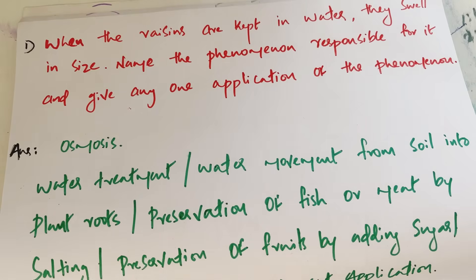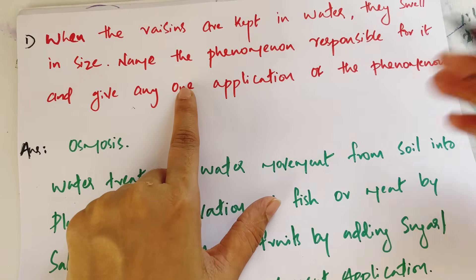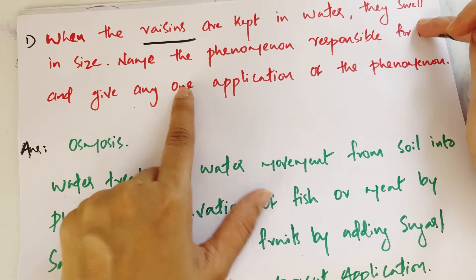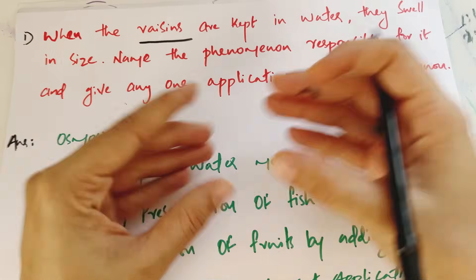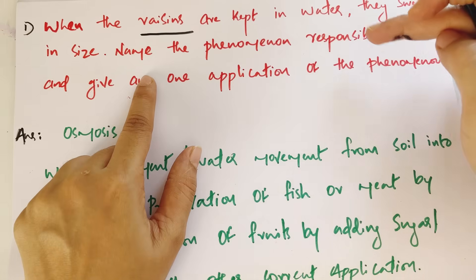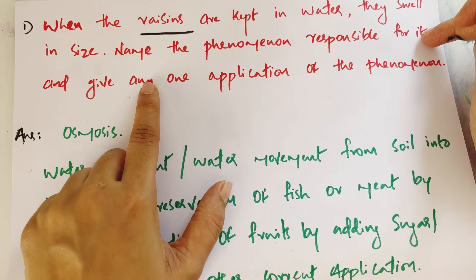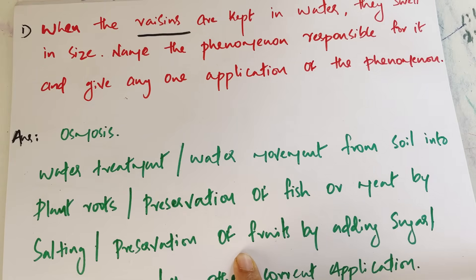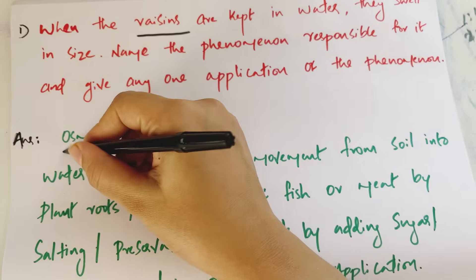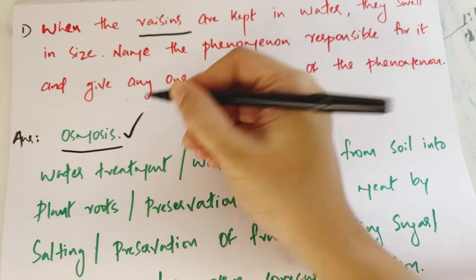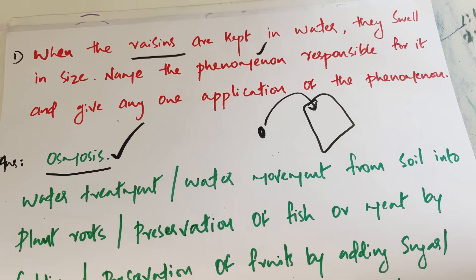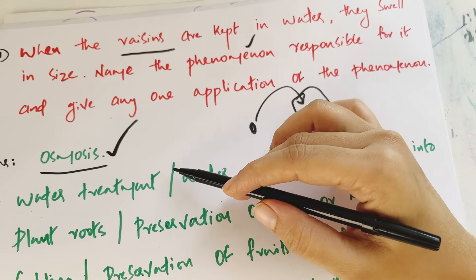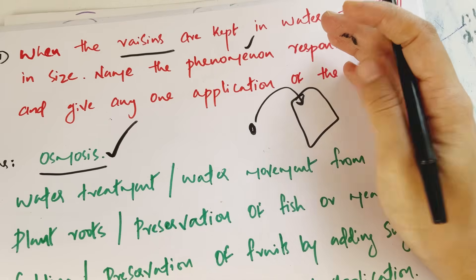When raisins are kept in water, they swell in size. Name the phenomenon responsible for it and give any one application of the phenomenon. What is happening here? Is this osmosis?